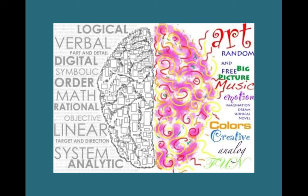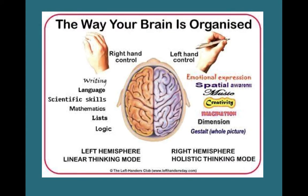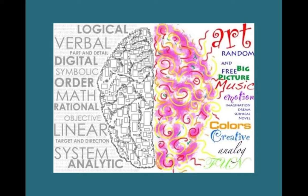The right side of our brain controls the left side of our body, and the left side of our brain controls the right side of the body. It also controls different understandings.